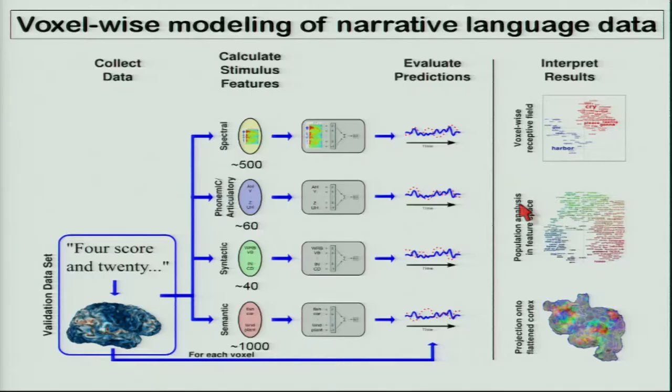Now we need to validate the model. To do that, we collect a second dataset using different stories. We take the new stories, project them into the feature spaces, multiply by our model, and get a prediction. Then we compare observed brain activity to predicted brain activity — essentially cross-validation using a fit set and a test set. For each voxel and each feature, we get statistical significance and importance — how much variance the model predicts. This is something you can't get from resting state or a decoding approach like MVPA, because you need a prediction of brain activity to estimate the noise ceiling, which turns out to be critical.